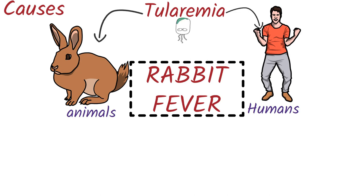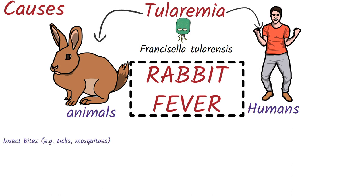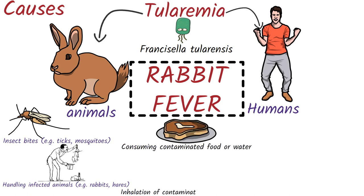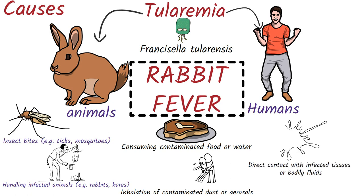The disease is caused by a small rod-shaped non-motile bacterium called Francisella tularensis. The bacterium is typically spread through insect bites like ticks and mosquitoes, handling infected animals like rabbits and hares, consuming contaminated food or water, inhalation of contaminated dust or aerosols, and direct contact with infected tissues or body fluids.